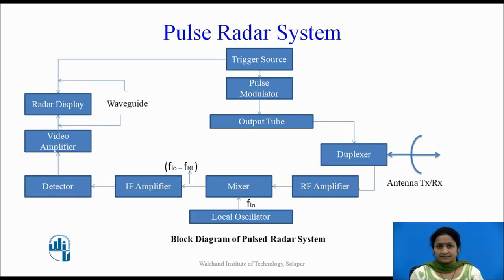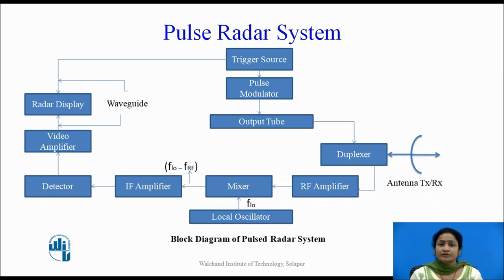In a Pulse Radar system, the transmitter part consists of a trigger source, pulse modulator, and output source, which are connected via a duplexer to the antenna. The receiver part consists of the RF amplifier, mixer, local oscillator, IF amplifier, detector, video amplifier, and the radar display.